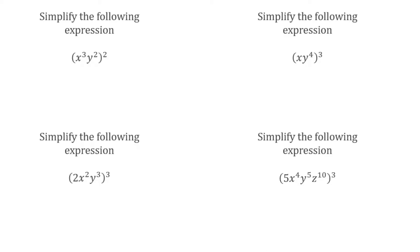For this next question, we've got x cubed y squared, all squared. This goes back to our law of indices where we have a base to a power raised to another power — in that scenario we multiply the indices together. We've got multiple terms so we need to do it to both. x cubed raised to the power of 2: 3 multiplied by 2 is 6, so x to the power of 6. And y squared raised to the power of 2: 2 multiplied by 2 is 4, so y to the power of 4. Fully simplified: x to the power of 6 y to the power of 4.